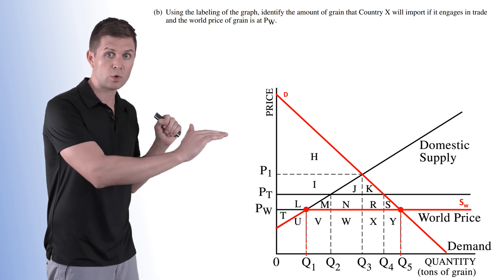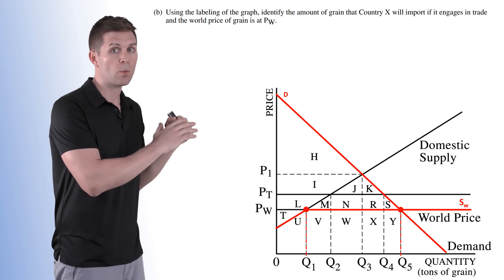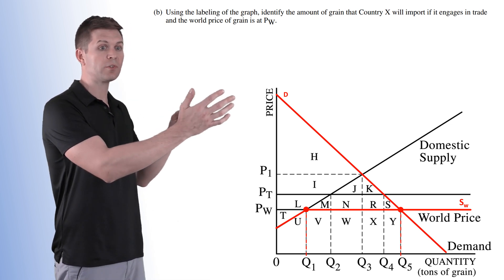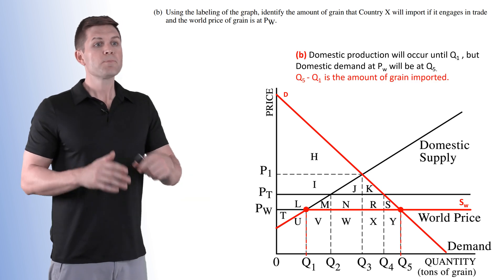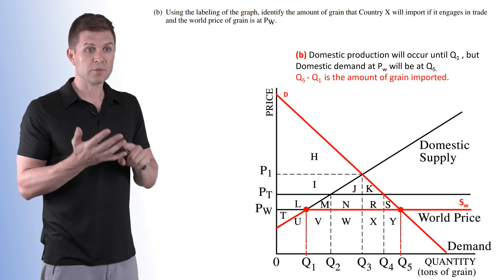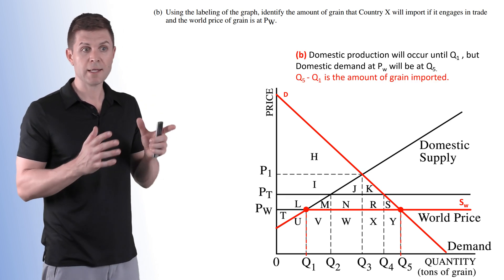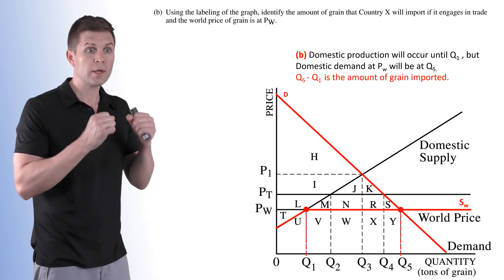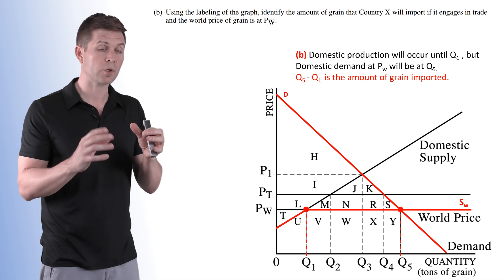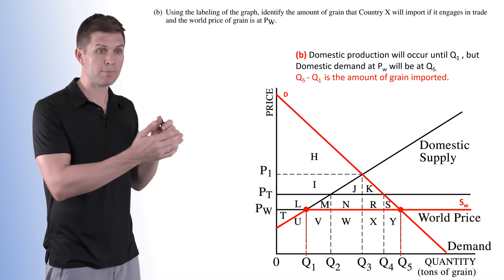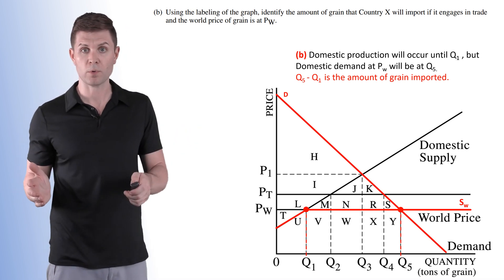Our domestic production is going to be Q1. This is the amount that we are willing to produce. After that we accept the world price and no more producers are willing to produce. All the marginal sellers left the market because price is too low. So Q5 minus Q1 is the amount of grain imported.